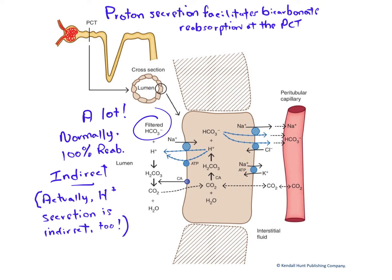Stay with me on this. In the cytoplasm of the PCT cell, we will reform carbonic acid in an enzyme-catalyzed process. Carbonic anhydrase catalyzes this hydration. As H2CO3 is produced in the tubular cell, it separates into protons and bicarbonate.